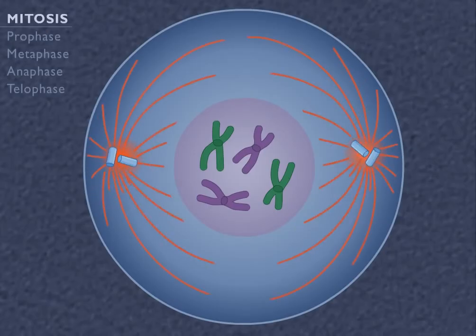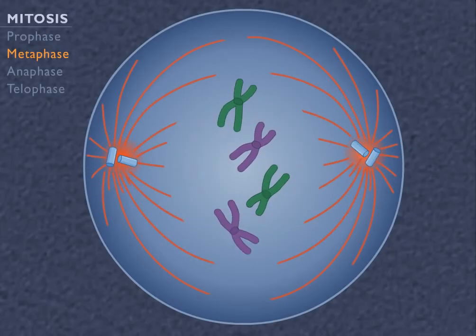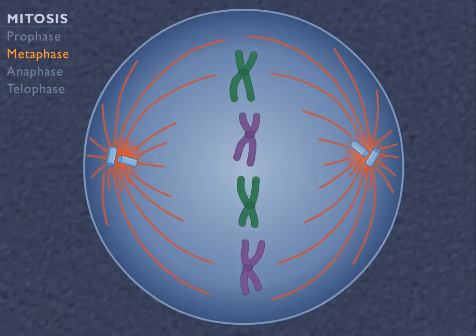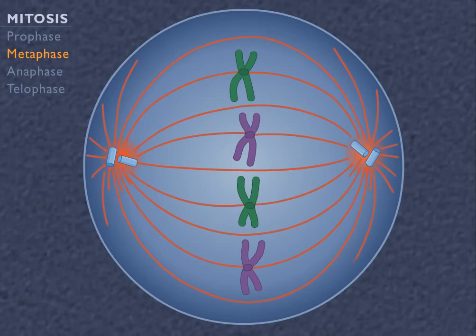During metaphase, the double-stranded chromosomes line up along the equator of the cell. The spindle is now fully formed and the microtubules attach to each sister chromatid.